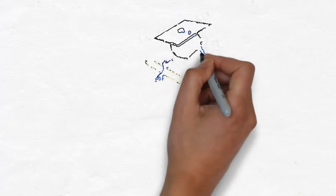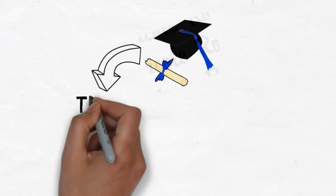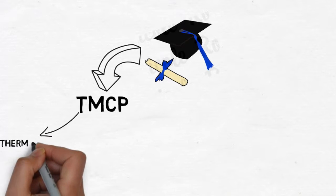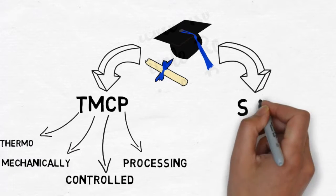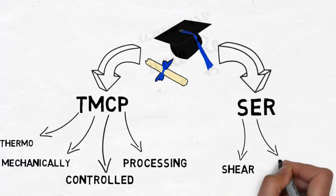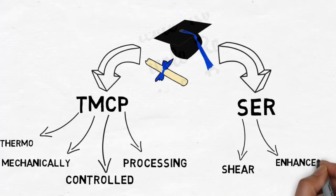Our graduation project is actually two projects in one. The first consists of optimizing TMCP parameters in order to reach both a stronger and harder plain low carbon steel. The second was to apply an entirely new concept, never implemented before in any industry in the world, named Shear Enhanced Rolling.